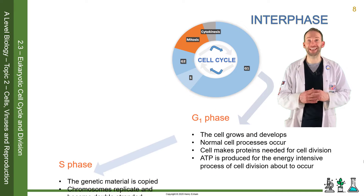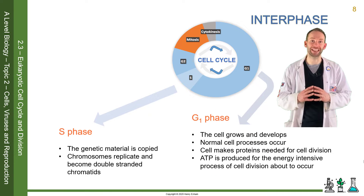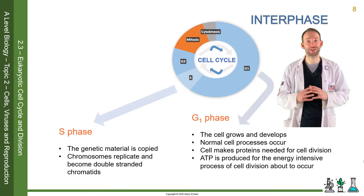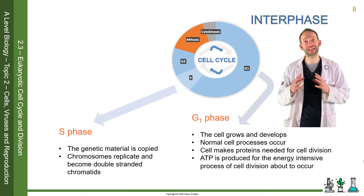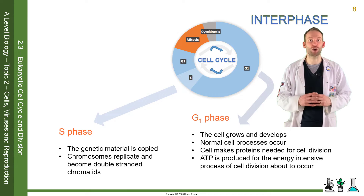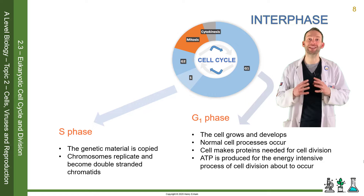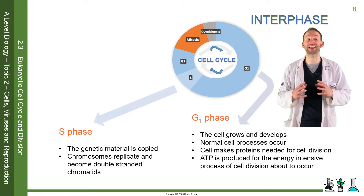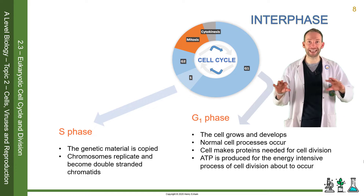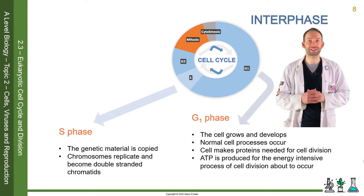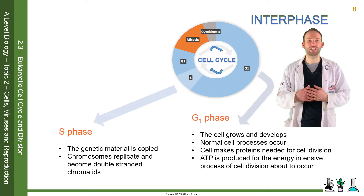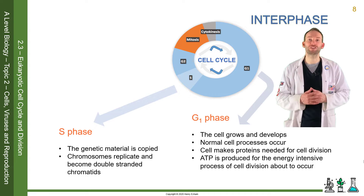The S phase is the next preparatory stage, because in the S phase of interphase, all that genetic material is copied — this is when DNA replication happens. We're going to need to split equal amounts of DNA into both the daughter cells that are produced, so we need to replicate the chromosomes at this point, and they become double-stranded chromatids.